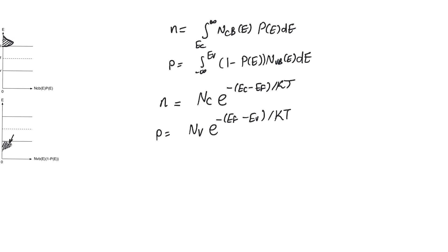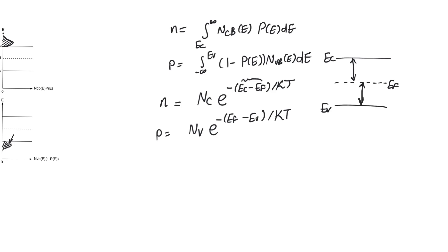We have to look at the parameters of these two expressions. E_F is a fictitious energy level within the band gap, representing the point at which it is equally probable to find an electron and a hole. E_C is the edge of the conduction band and E_V is the edge of the valence band. So (E_C - E_F) is the distance from E_F to E_C, and (E_F - E_V) is how high above E_V the Fermi level sits. They are energy differences.